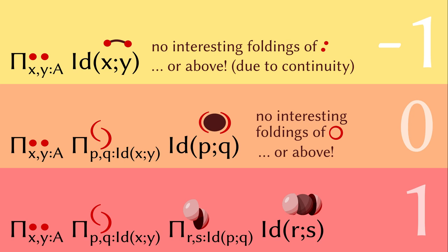Moreover, because our filler is chosen continuously, it also kills all interesting homotopies of higher dimensions. So, nothing is interesting above dimension zero, and the type is thus at level zero.